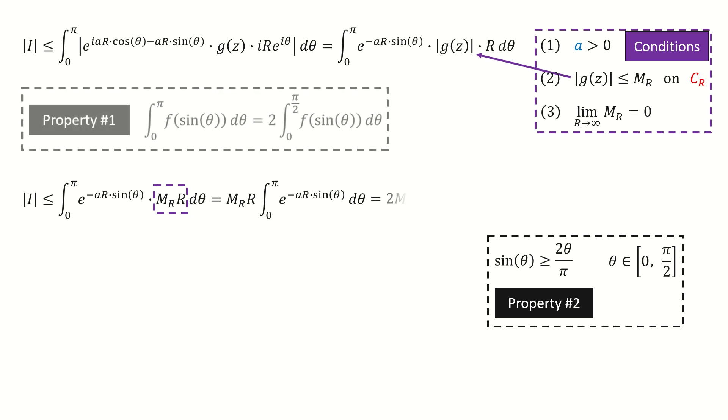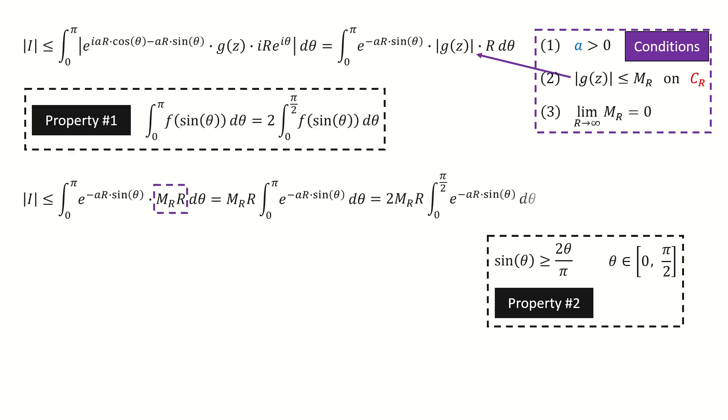Now we use property number 1, and we got here. And note the upper limit is converted to half pi. And next, we use property number 2. Note property number 2 is valid for theta between 0 and half pi. And that's why we need to apply property number 1 first, to convert the integral upper limit from pi to half pi.